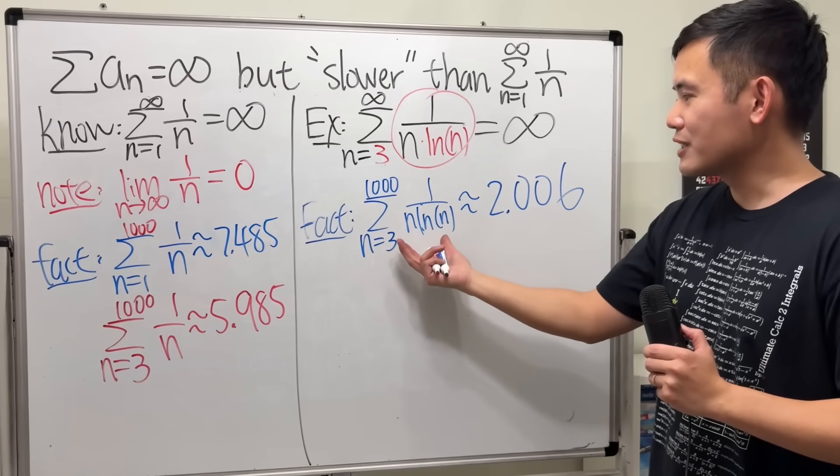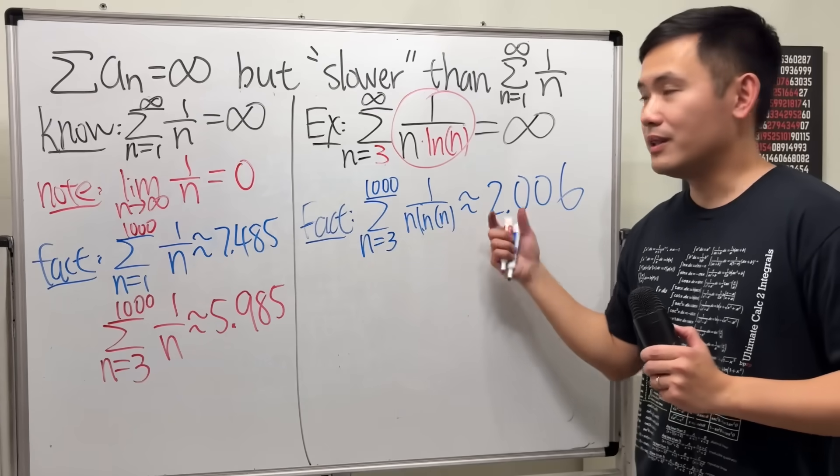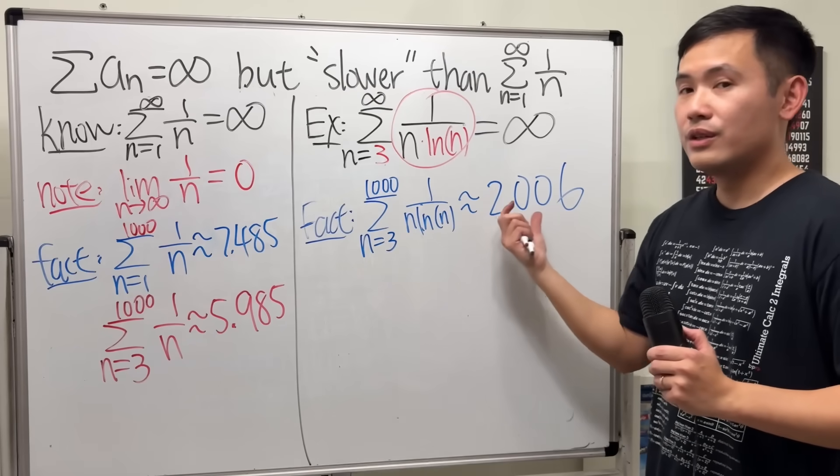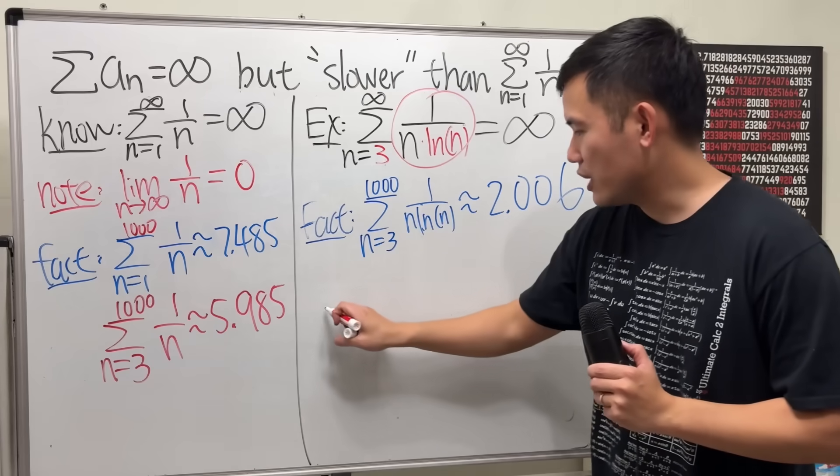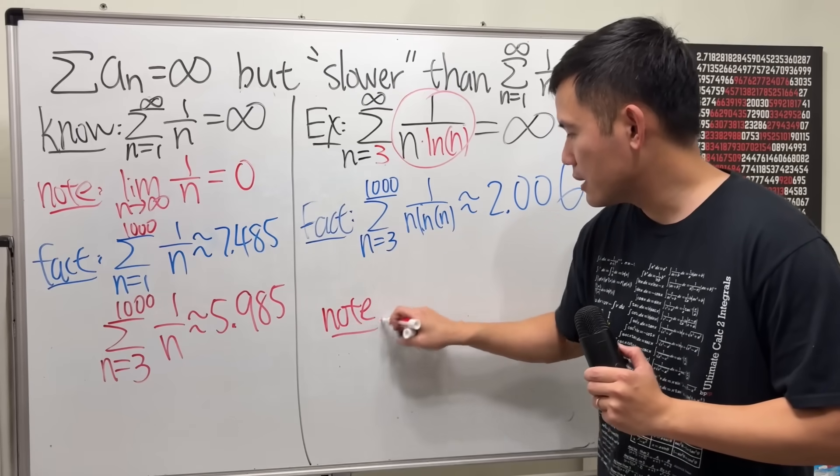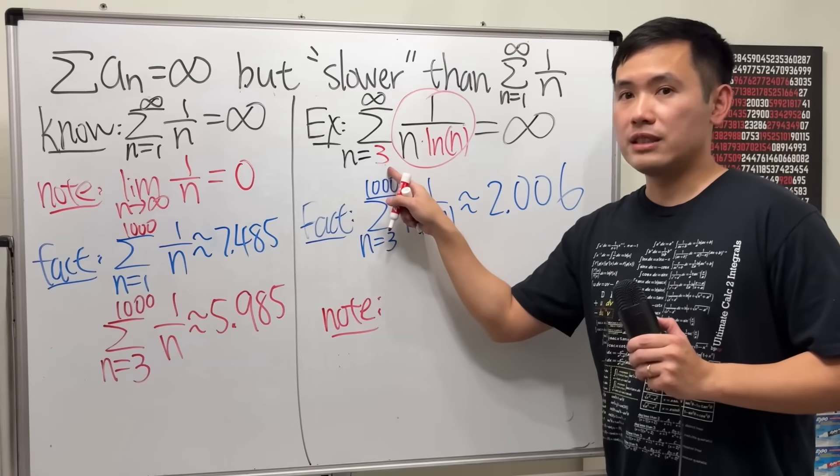so you can see that the partial sum is smaller than that, so it goes to infinity and it's going to be slower. Another thing that you can check is, note that...